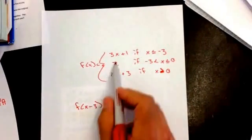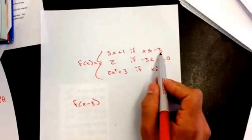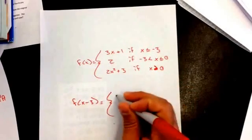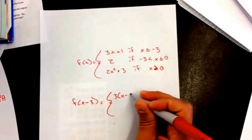And that doesn't just mean this, it also means my rule over here. So I'm going to plug in x minus 3 wherever I have an x.